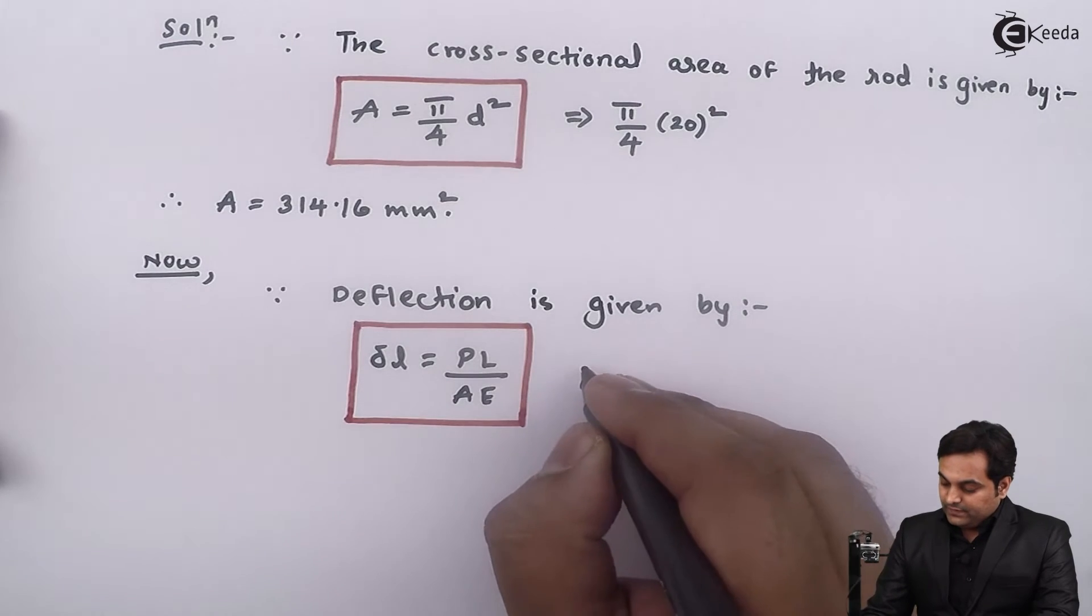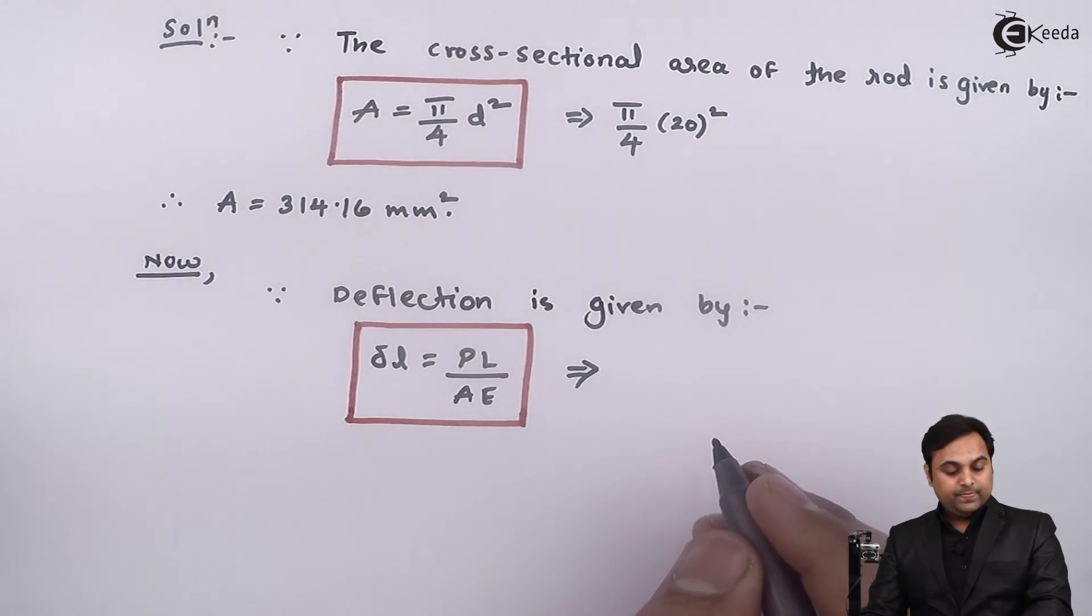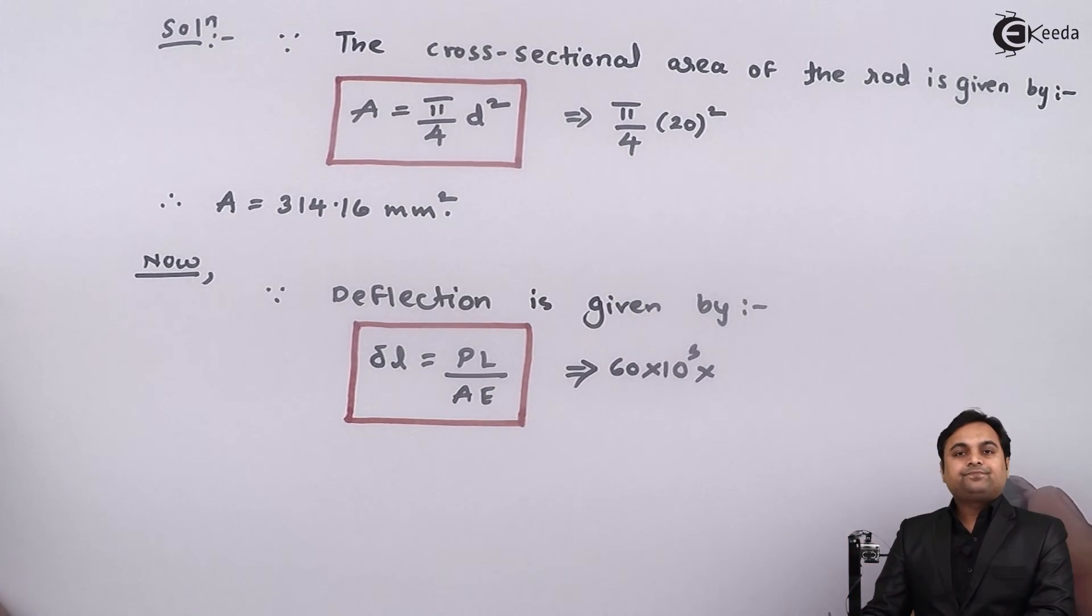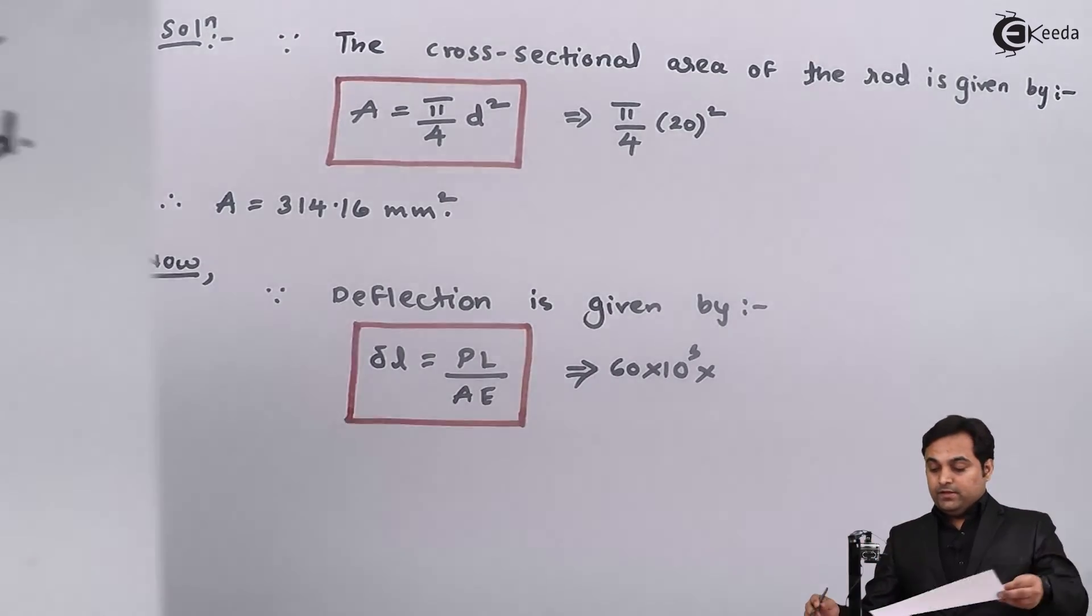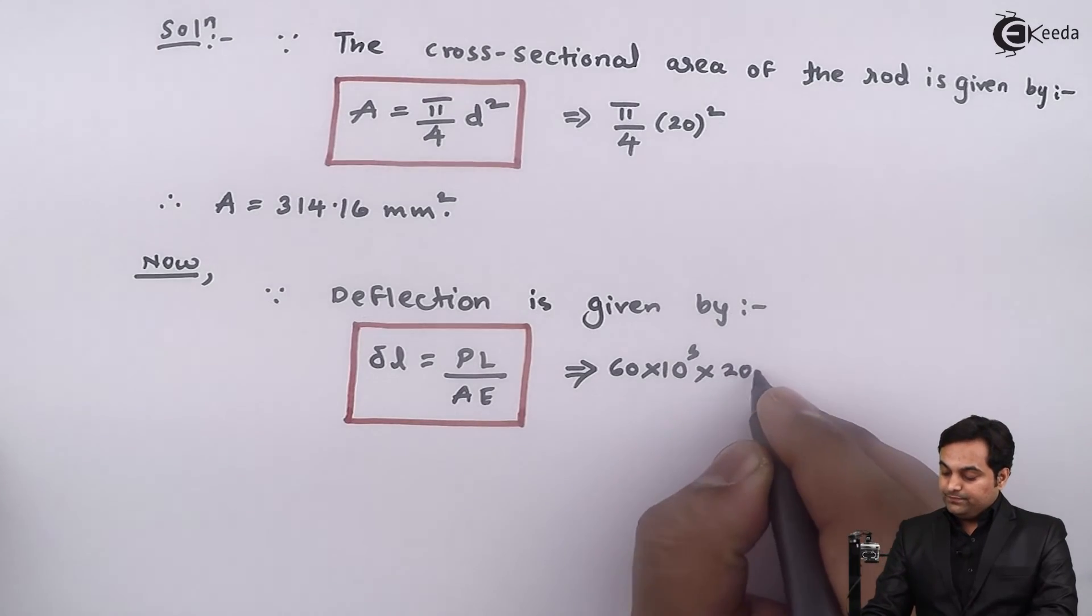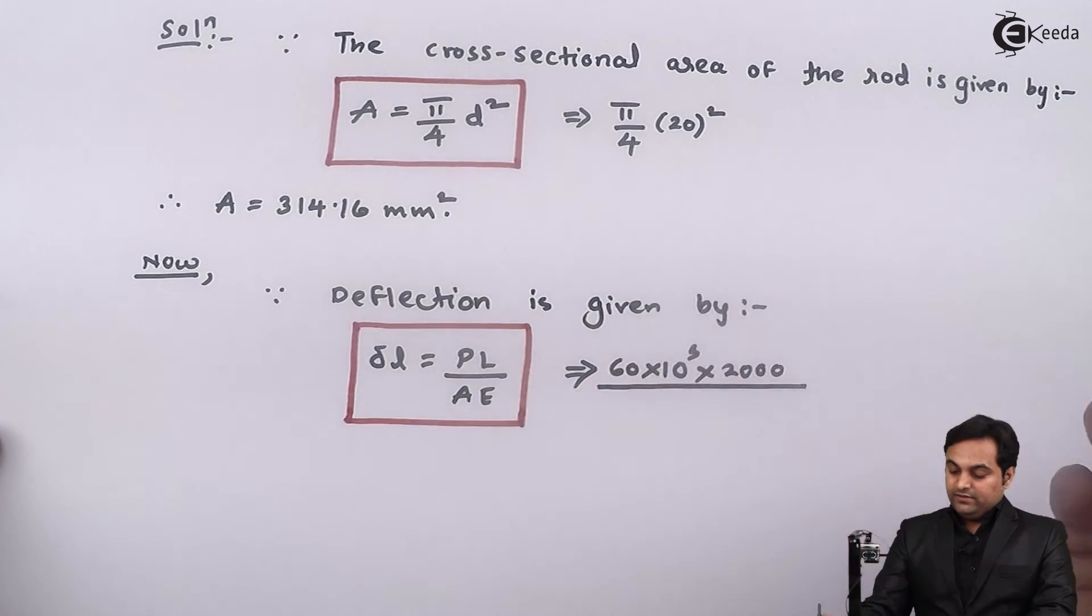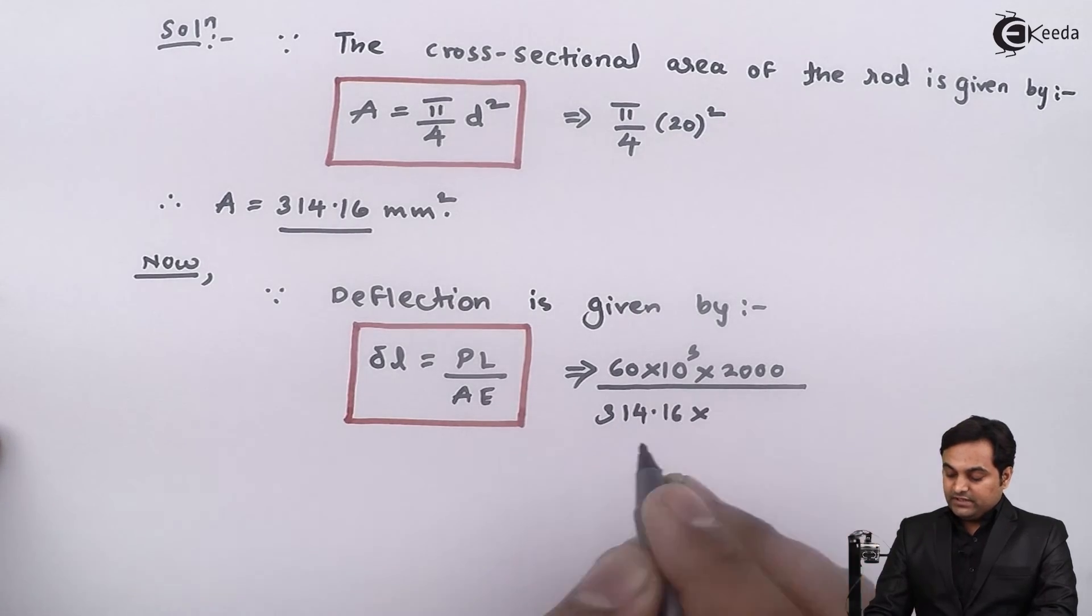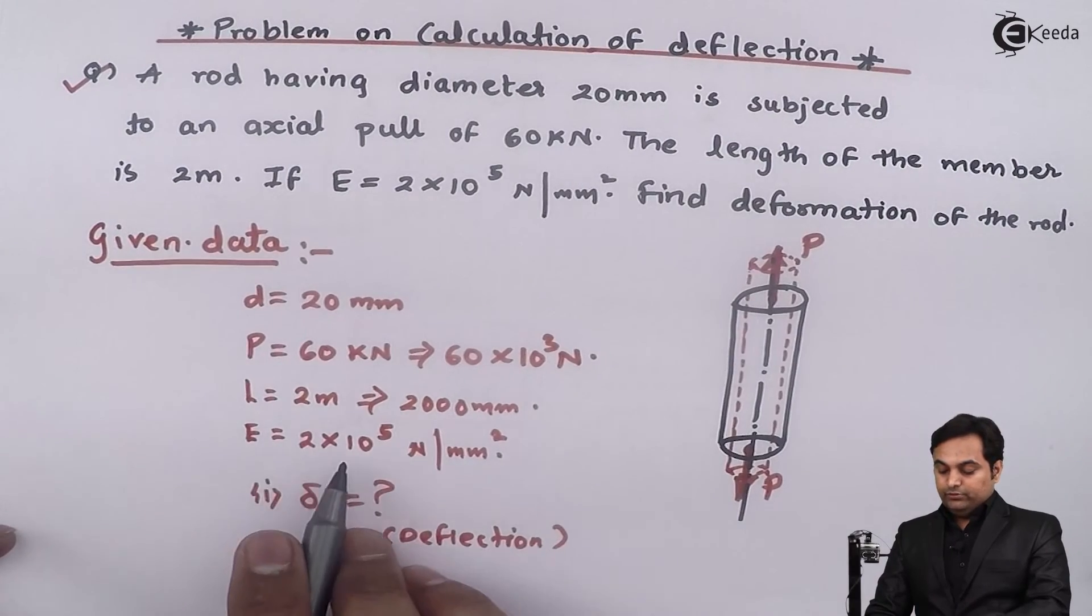So now I will go on putting the values. P, that is the load, it is 60 kilonewton given, so 60 into 10 raised to 3. Length of the member was given as 2 meters, so it is 2000 mm, so into 2000. Divided by area, we have got the values 314.16, and capital E Young's modulus, 2 into 10 raised to 5.